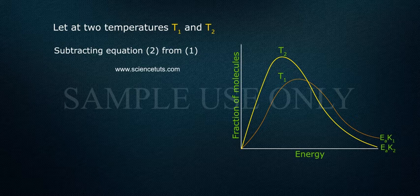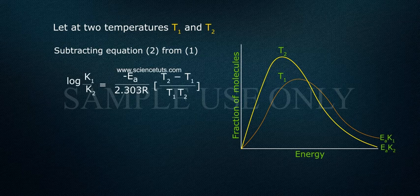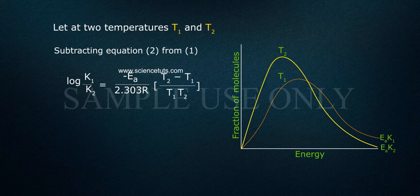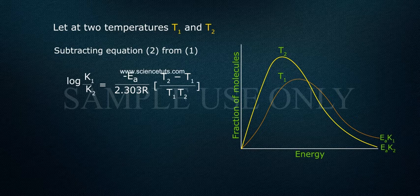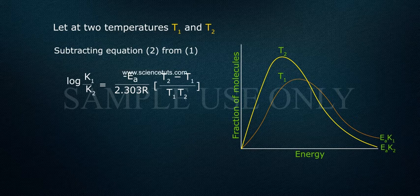Subtracting equation 2 from 1, log K1 by K2 equals minus Ea by 2.303 R into T2 minus T1 by T1 T2.